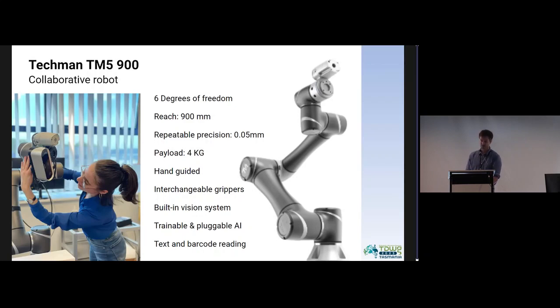It's got six degrees of freedom, so that's the number of joints it's got and how precise you can be with the movements. It's got nearly one meter in reach, so we can reach across the insect drawers. It can only lift about 4kg, but it's more than enough for our needs. It's got this lovely hand-guided processing, so you can move and click it into position, and that's how you can actually program it.